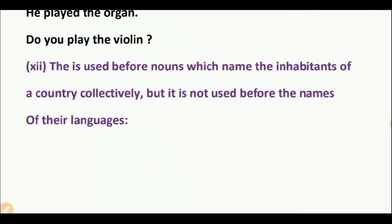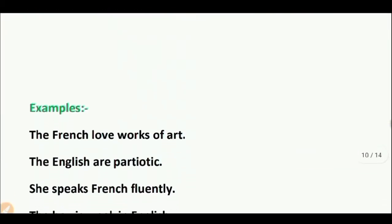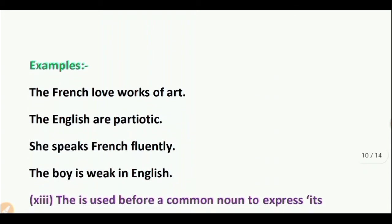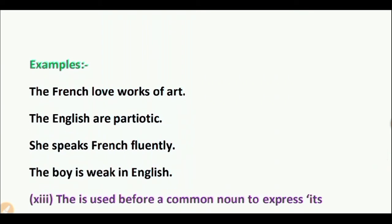Point 12: 'The' is used before nouns which name the inhabitants of a country collectively, but it is not used before the names of their language. Examples: The French love works of art. The English are patriotic. She speaks French frequently — here 'French' refers to the language, so no article. The boy is weak in English — 'English' refers to the language, so no article used.